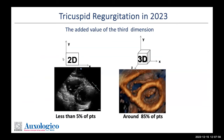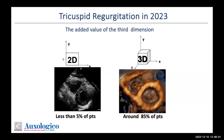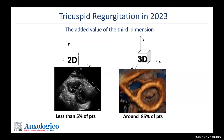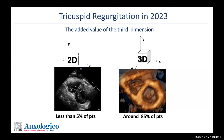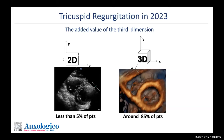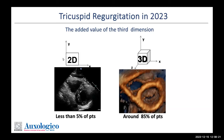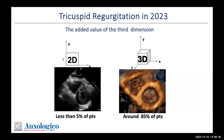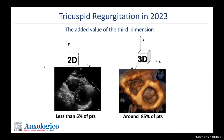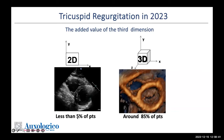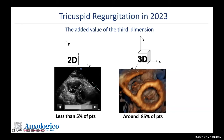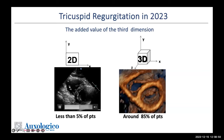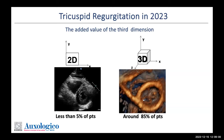One important technological advancement that completely changed our approach to the tricuspid valve was the introduction of three-dimensional echocardiography. Differently from the mitral valve, the tricuspid valve has three leaflets, and it is very uncommon that we can see all three leaflets in a single two-dimensional echo view. Even when you can, what you actually see is just the border of the leaflets — three white lines dancing in the dark.